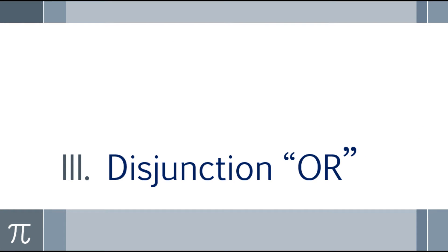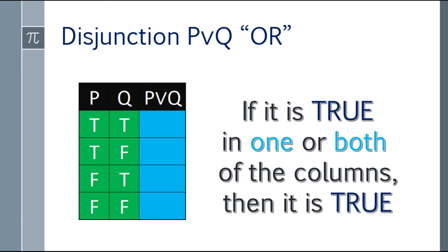All right, the third topic is disjunction, or OR. The logical operator here is V. The technique: if it is true in one or both of the statements, then it is true. As long as at least one statement is true, the answer is true.